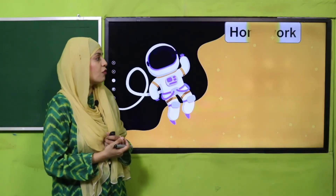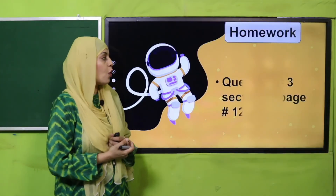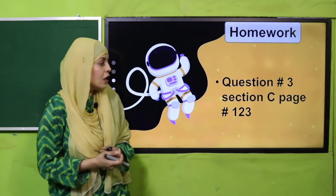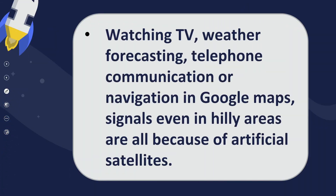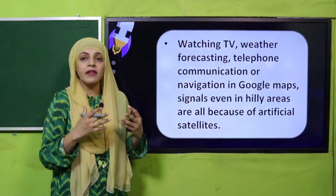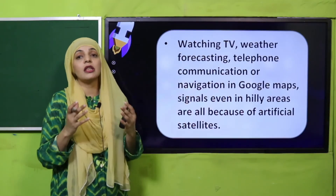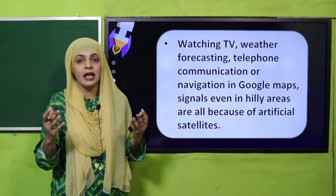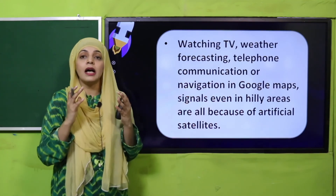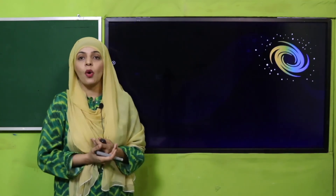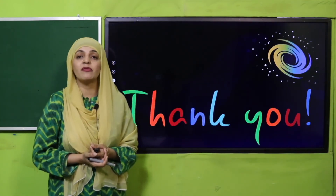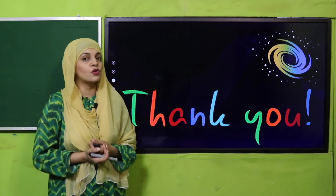For homework, do question number three from section C, page number 123 in your notebooks. In today's wrap-up, we learned that TV communication, weather forecasting, GPS, and navigation are all possible with the help of artificial satellites. Artificial satellites provide much better data than ground-based instruments. I hope you enjoyed today's lecture — keep everyone around you safe, have a good day, thank you so much, Allah Hafiz.